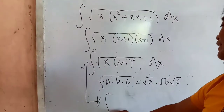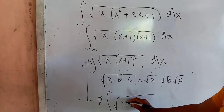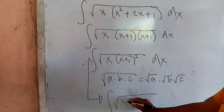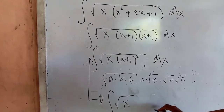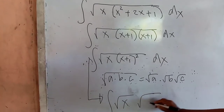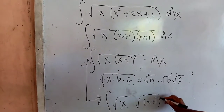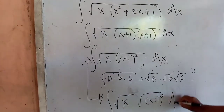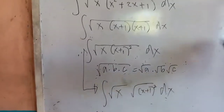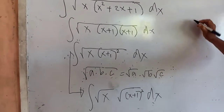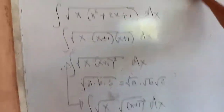Meaning, this will be the integral of the square root of x, multiplied by the square root of the quantity (x plus 1) to the second power, multiplied by the differential dx. Now, this is the radical form; to change to exponential form.